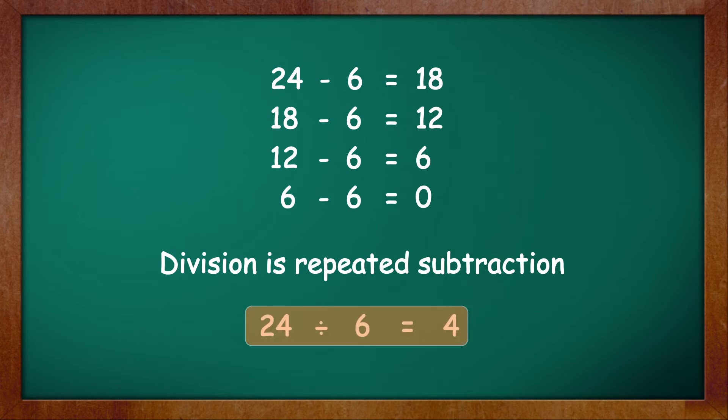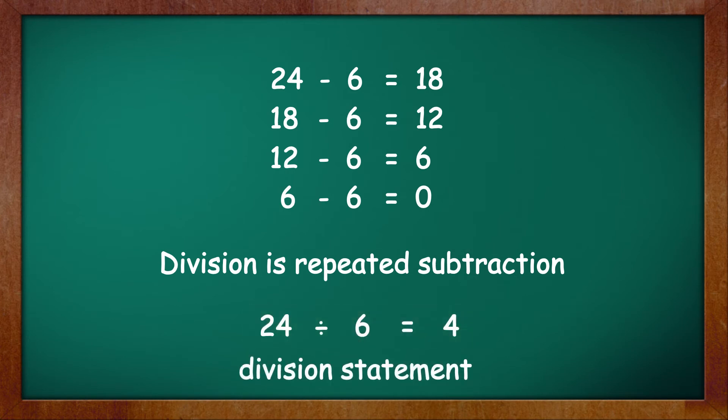When the teacher distributed 24 candies equally among six children, each child got four candies. This statement — 24 divided by 6 is equal to 4 — is called a division statement.